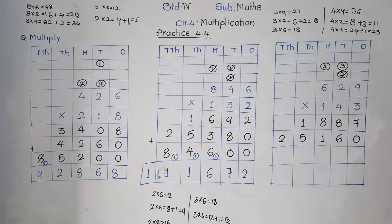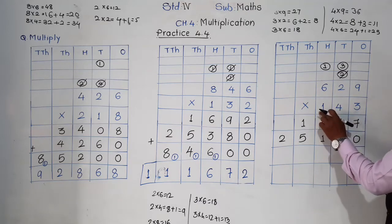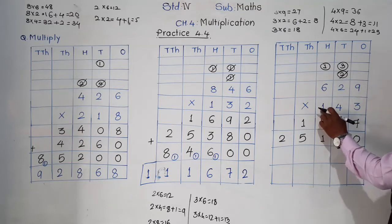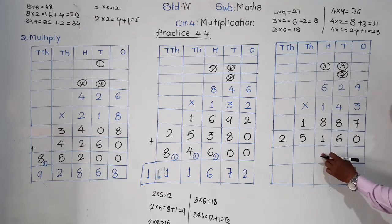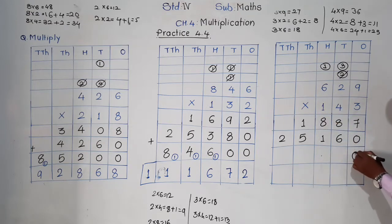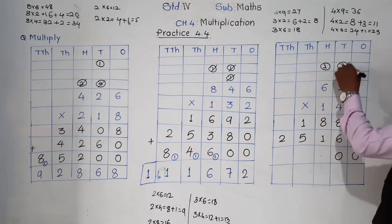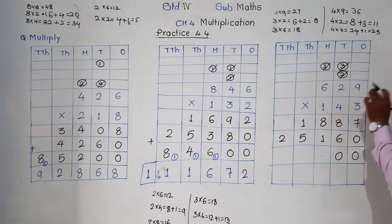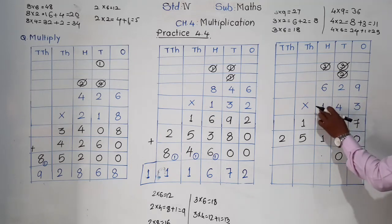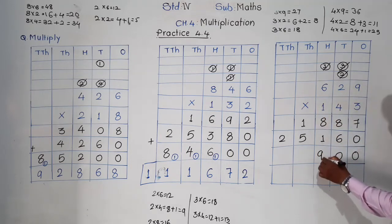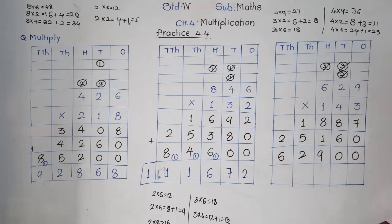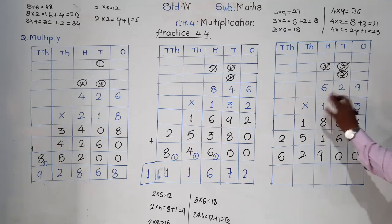Finished multiplying by the tens place digit. Now multiply by the hundreds place digit, which is 1. Since we are multiplying by the hundreds place digit, its answer starts from the hundreds place. Put zeros in the ones place and tens place; cut the carry from multiplication by the tens place. 1 nines are 9, 1 twos are 2, 1 sixes are 6. These are the three products of the three digits.